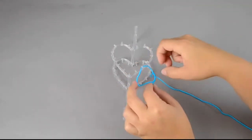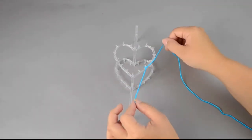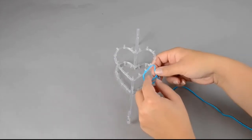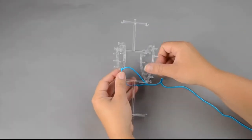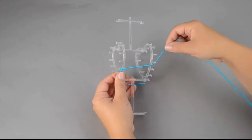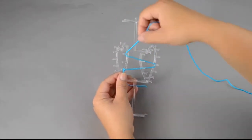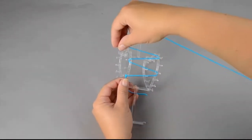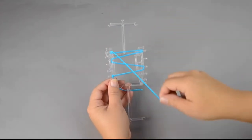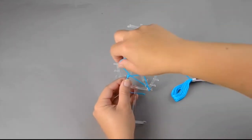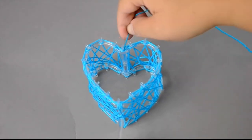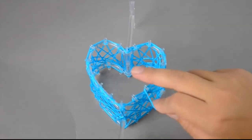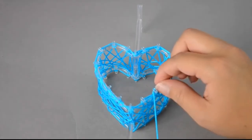Knot the blue thread onto a peg on the small heart. Wrap the thread from a peg on one heart to a peg on the other heart. Wrap around the perimeter and finish with a knot.